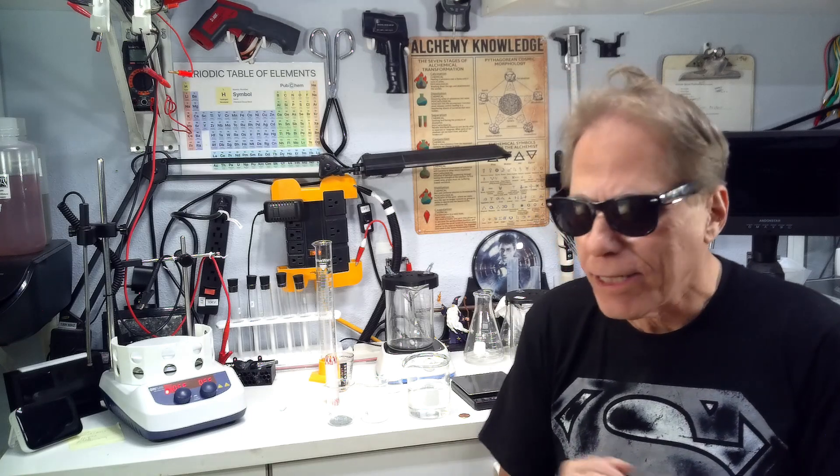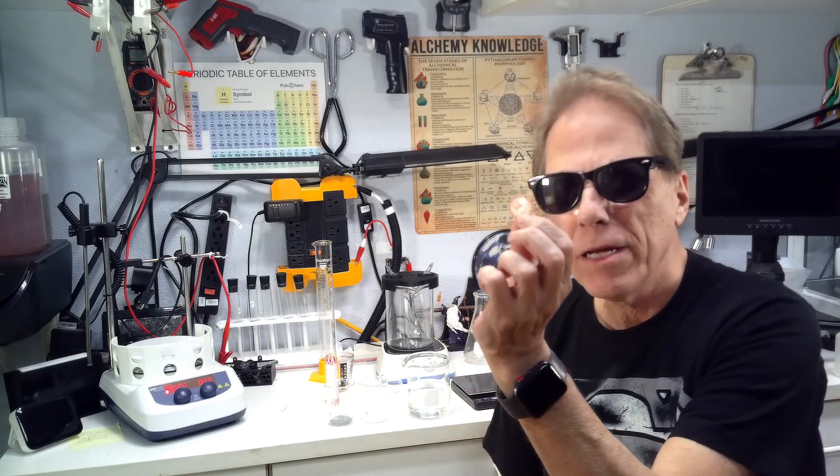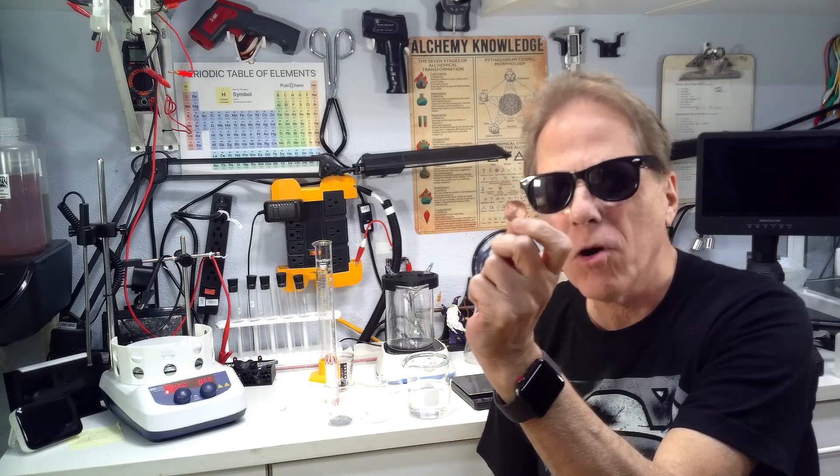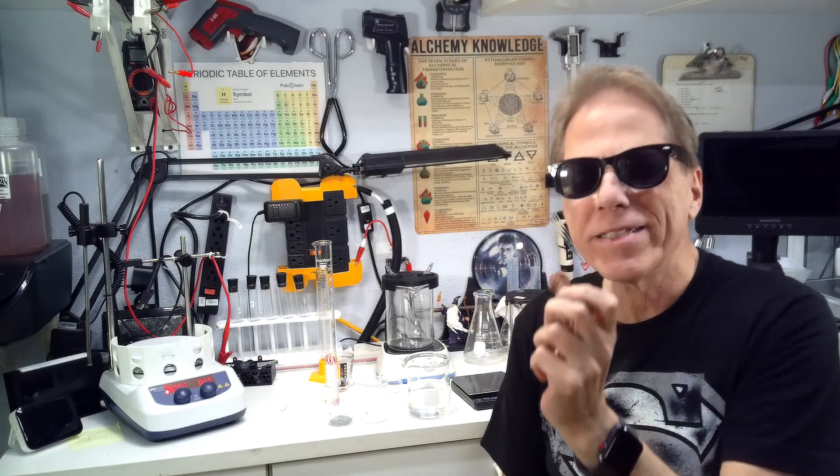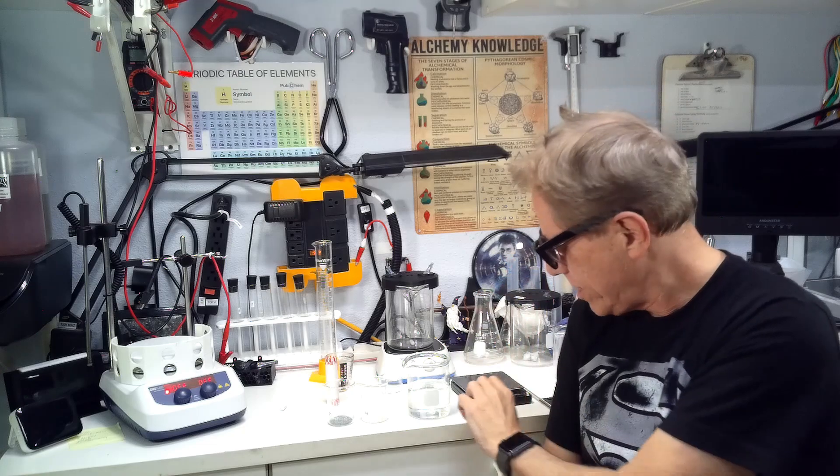Welcome to Alchemy Wizard. I'm Tom. Today we're going to take an ordinary copper penny and turn it into a gold penny. This is alchemy at its best, changing one thing into another. So let's get started.